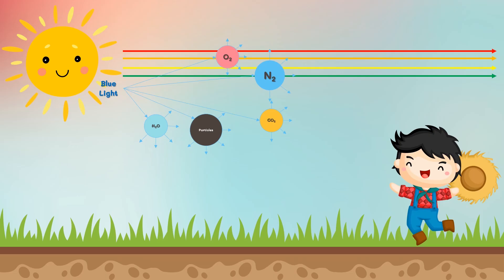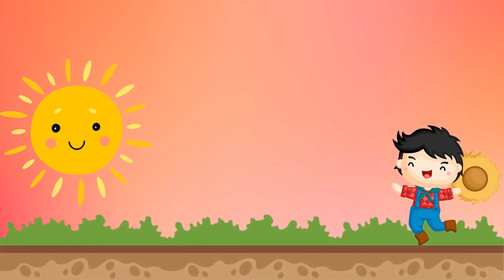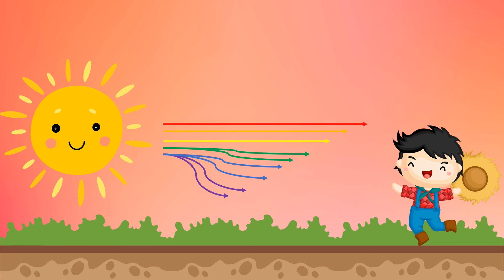Now, what makes the sunset and sunrise red? At sunset or sunrise, when the sun is near the horizon or low in the sky, sunlight travels a longer distance through the atmosphere before it gets to your eyes. However, the blue light is unable to pass. It becomes scattered in the atmosphere before it even reaches your eyes. Hence, only the longer wavelengths such as orange and red are left, making the sun and the sky around it appear red or orange.